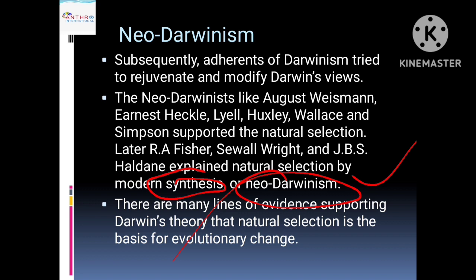There are many lines of evidence supporting Darwin's theory that natural selection is the basis for evolutionary change. This is the basis where evolutionary change starts. The supporters of Darwinism — those who kept the synthetic theory, modern synthesis, and Neo-Darwinism — proved this.